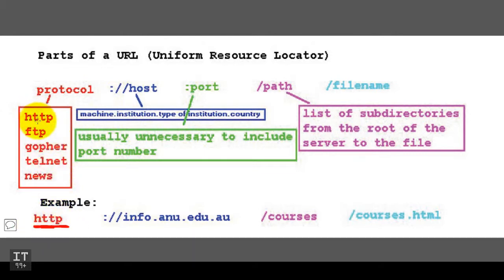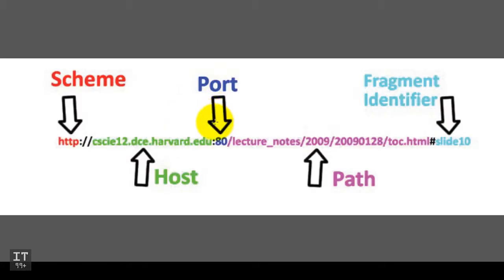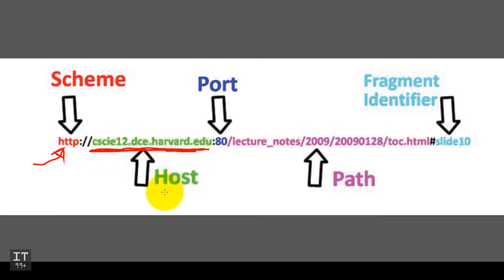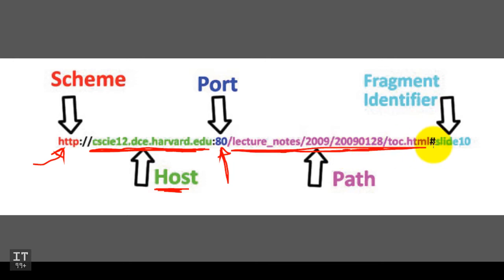Looking at this slide: the scheme is shown here — we are interested in the HTTP protocol in this lecture. This is the host — where the resource is being hosted. This is the port number the web server is listening on. This is the path on the server. And this is a fragment identifier embedded inside the HTML file; in that case the path will also include the HTML filename. That should conclude this tutorial — bye for now.